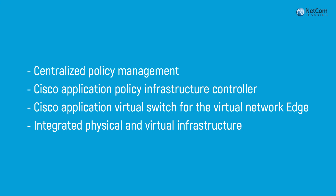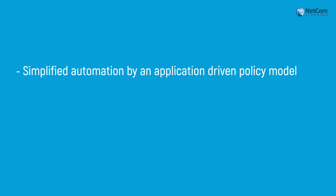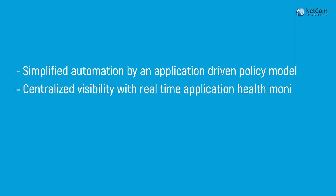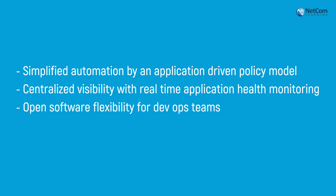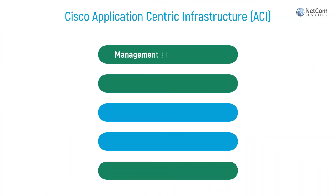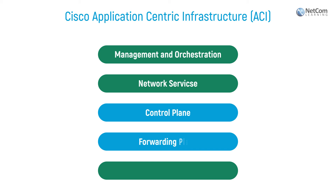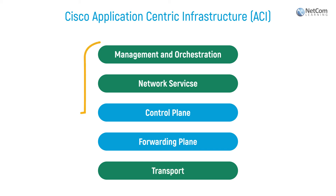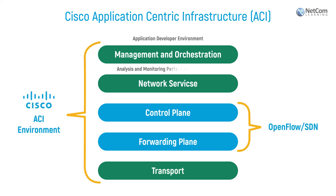Some of the characteristics of ACI include simplified automation by an application-driven policy model, centralized visibility with real-time application health monitoring, and open software flexibility for DevOps teams. You've got scalable performance for multi-tenancy and hardware. The future of networking with ACI is about providing a network that you can deploy, monitor, and manage in a way that supports DevOps and rapidly changing applications.